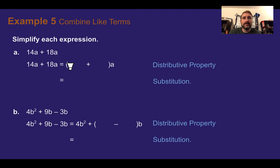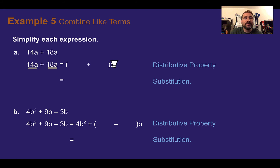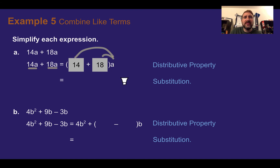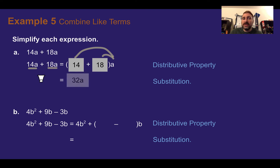Example 5: Combine like terms. Simplify each expression. Like terms have the same variable with the same exponent, and we just combine the coefficients and leave the variable alone. For part a, 14a plus 18a: both have an a, so we get 14 plus 18 times a. Using substitution, 14 plus 18 equals 32, so we end up with 32a.